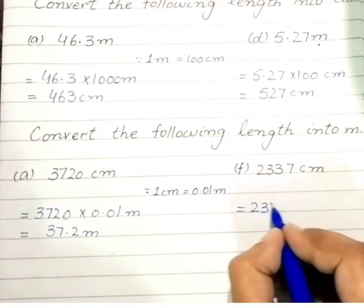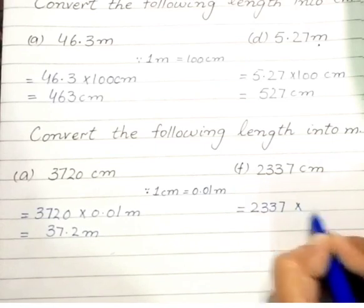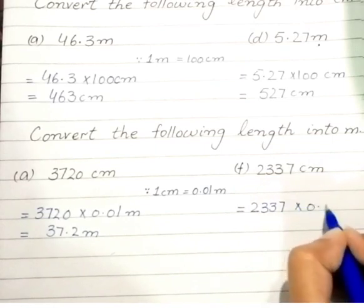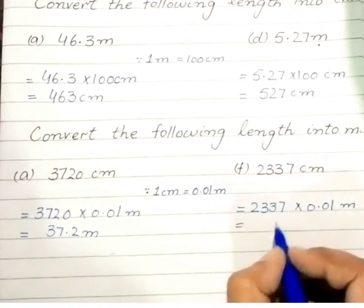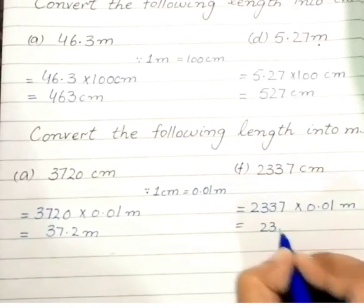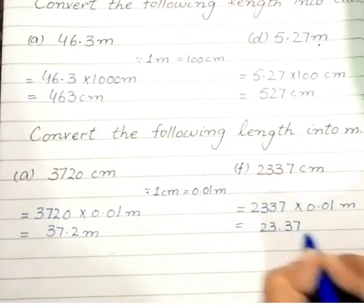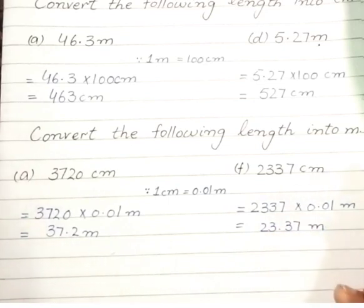2,337 is multiplied with 0.01 meter, so the answer is 23.37 meter. Okay students, I hope your concept is clear. Take care of yourselves, Allah Hafiz.